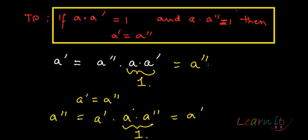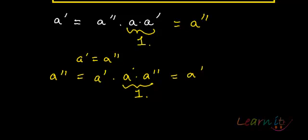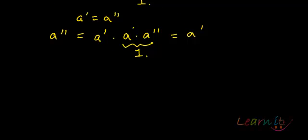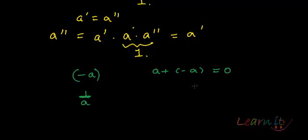The unique inverse with respect to addition is denoted as minus a, and with respect to multiplication it is denoted as 1 over a. This is because a plus (minus a) always gives 0 — the neutral element of addition — and a multiplied by 1 over a gives the identity element of multiplication. Thank you.